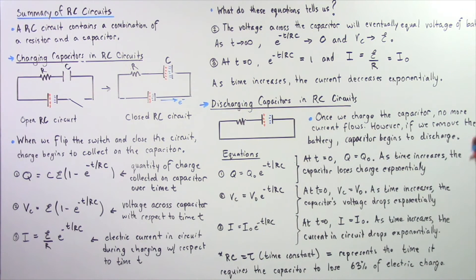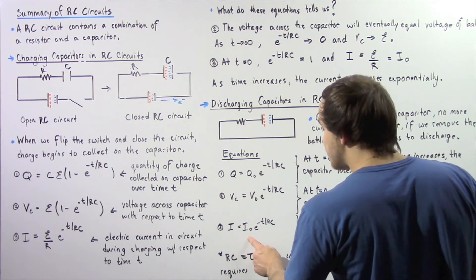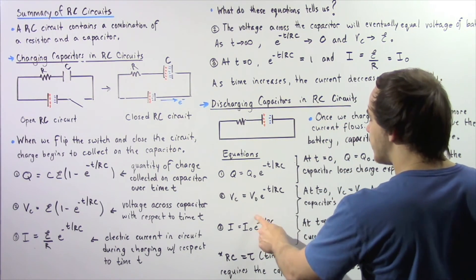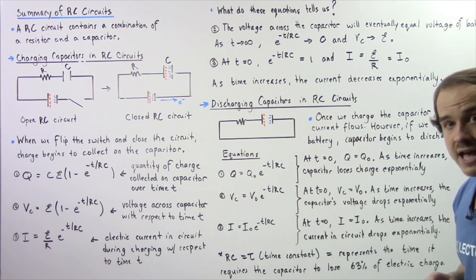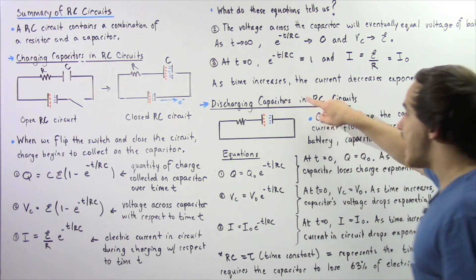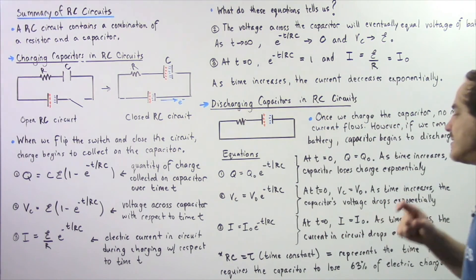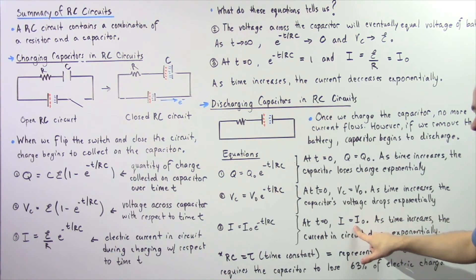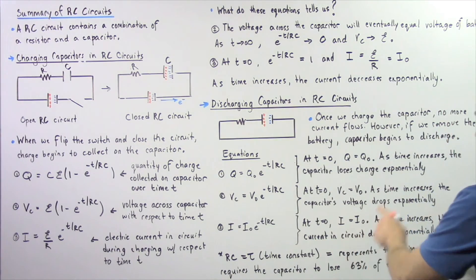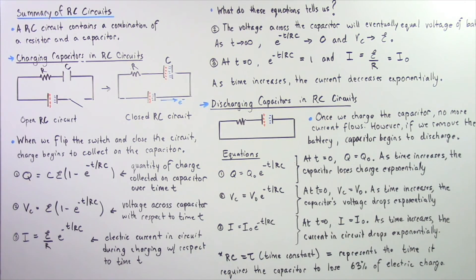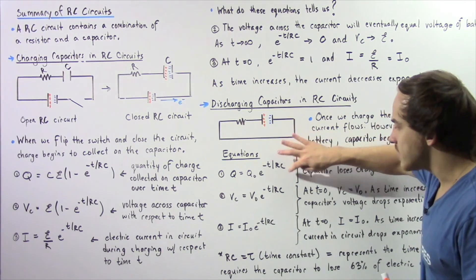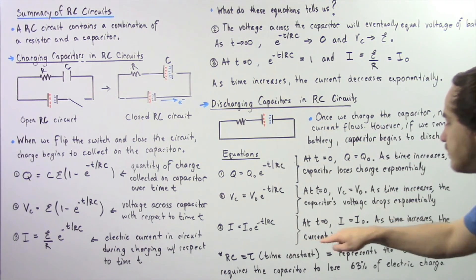Equation three shows that the electric current in our circuit equals the initial current I-naught multiplied by E to the power of negative T divided by RC. At time equals zero, the electric current is at a maximum given by I-naught. As time increases, the current drops exponentially, just like the voltage and electric charge. Once again, the quantity RC represents our time constant — it represents the time required for the capacitor to lose exactly 63% of its electric charge.